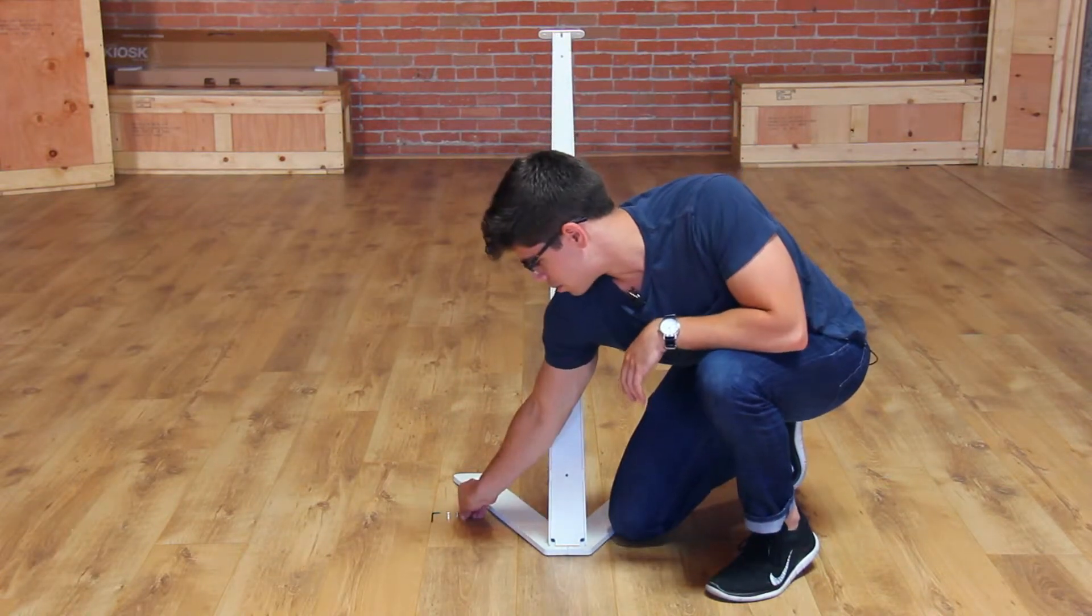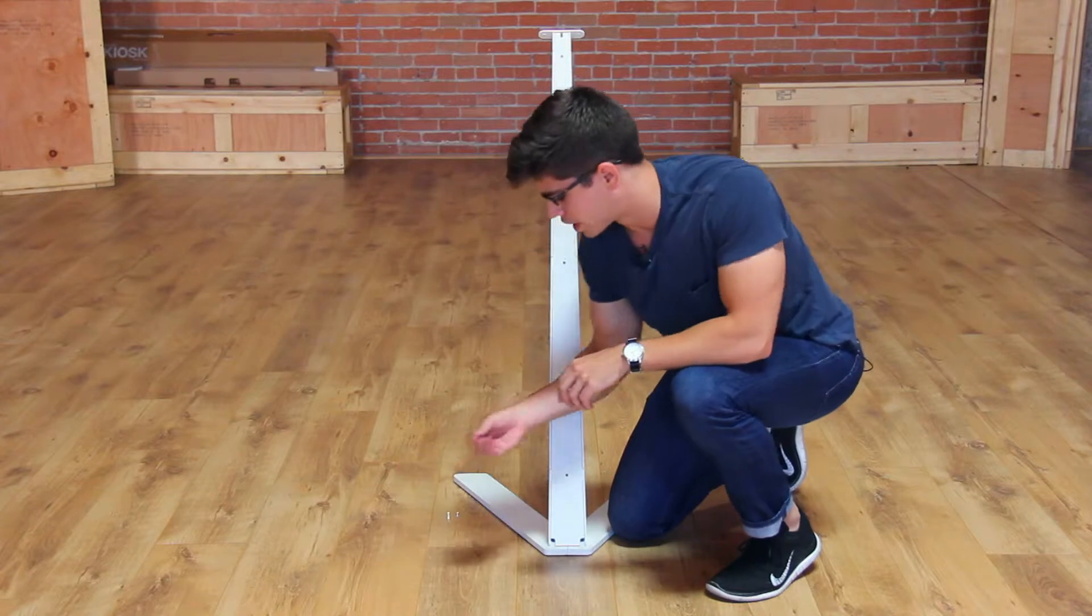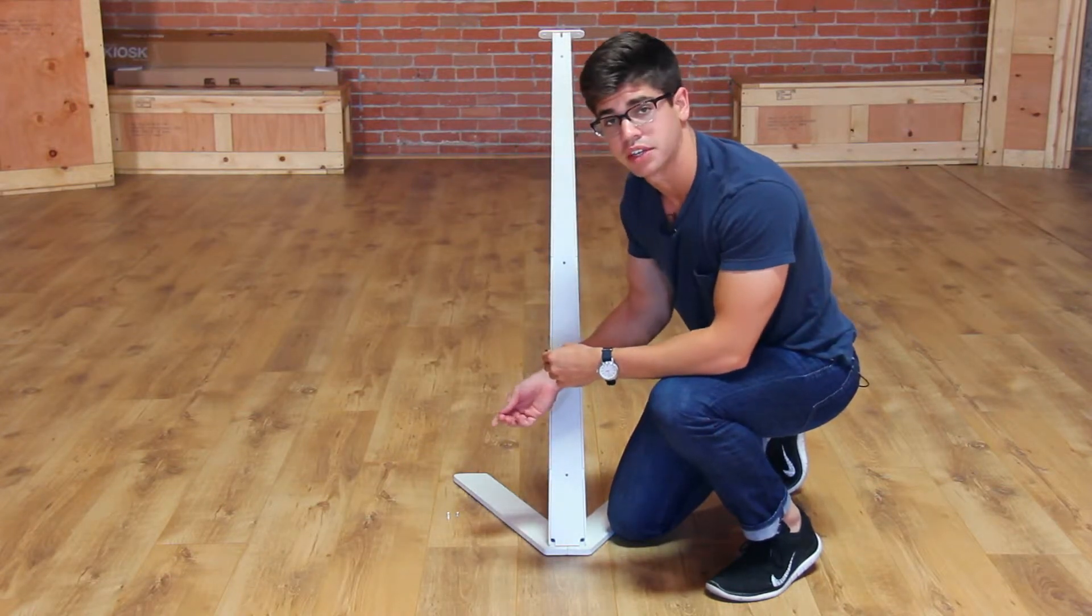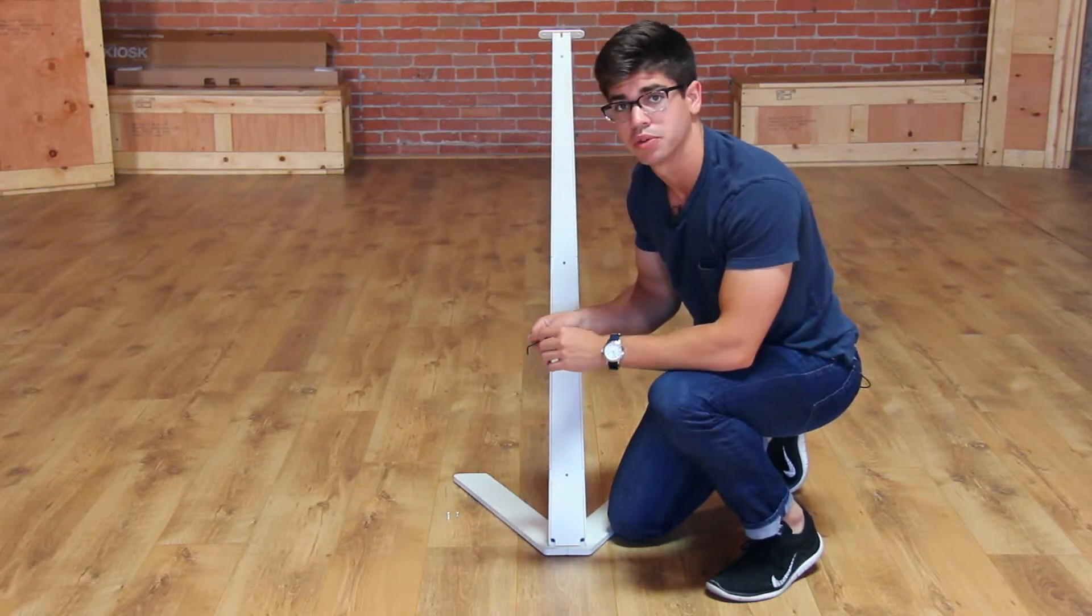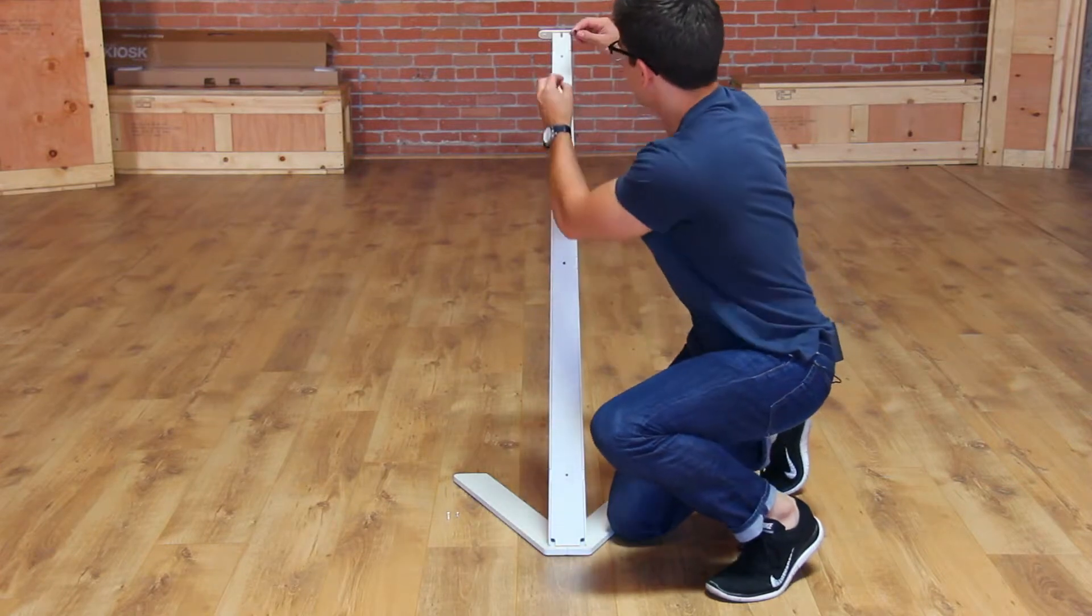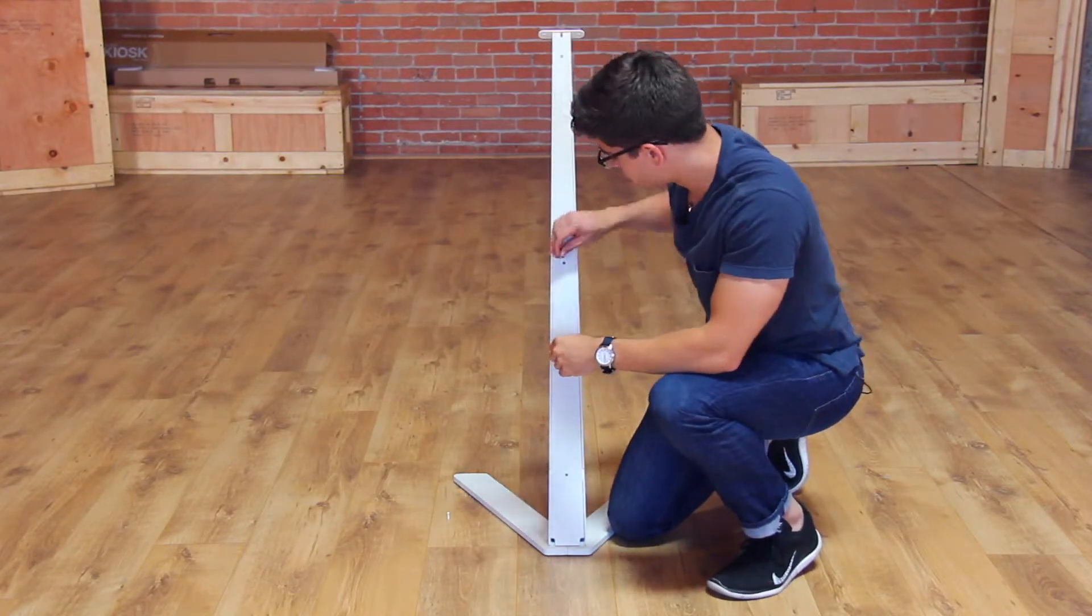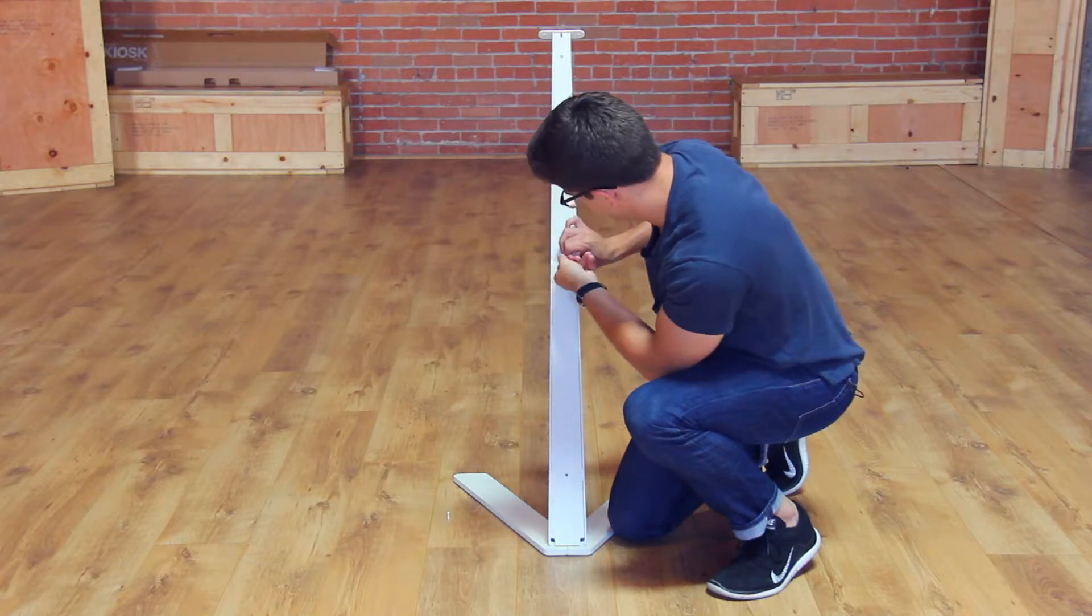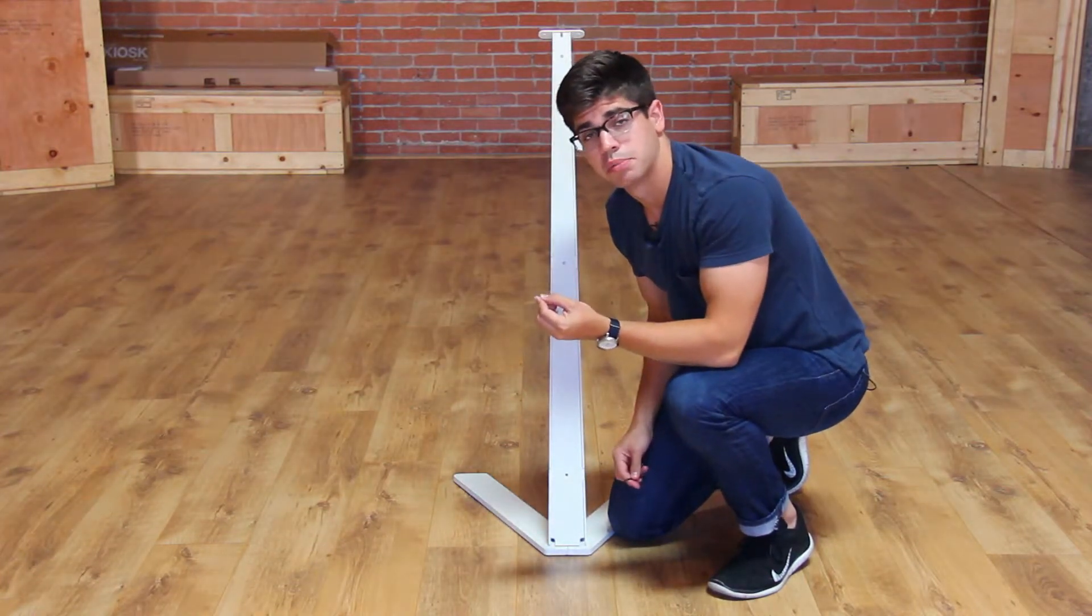Now if you remember when you disassembled the neck back plate from the neck itself, there were three different length screws. The shortest screw will go at the top of the neck. The medium length screw will go in the middle and the longest length will go at the bottom.